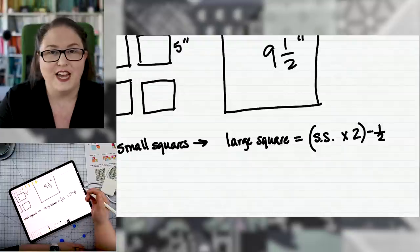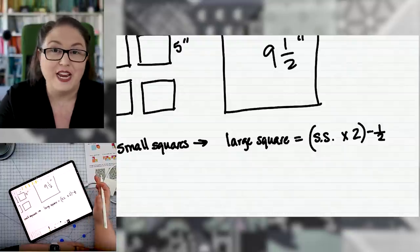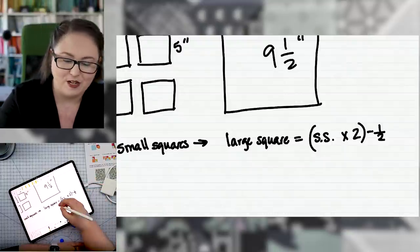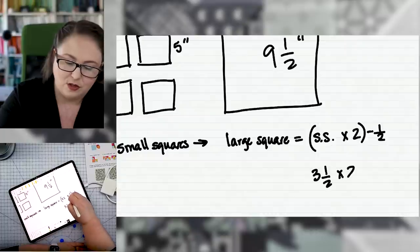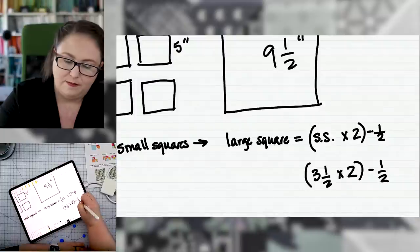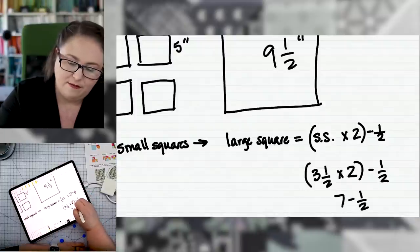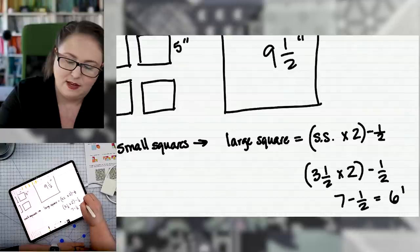So let's say you have a bunch of three and a half inch squares left over from a project. Three and one half times two minus one half is seven minus one half